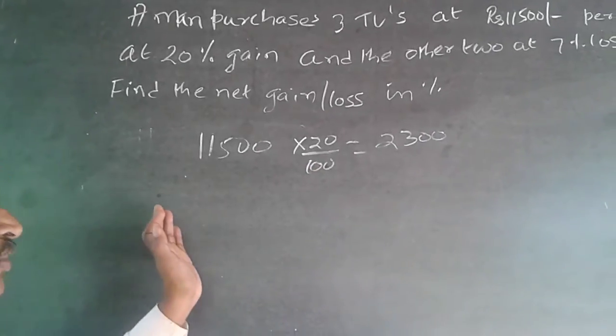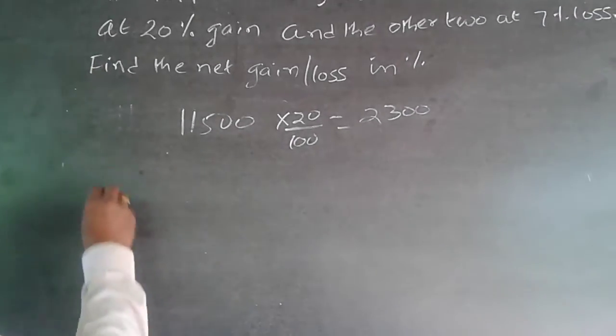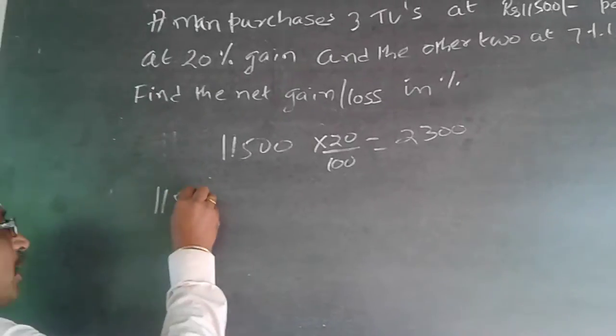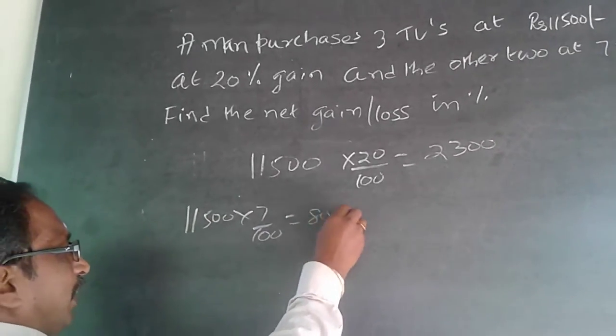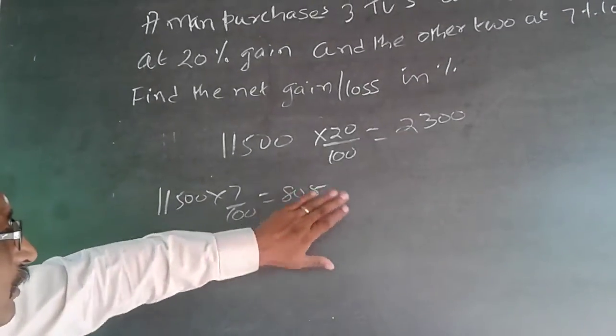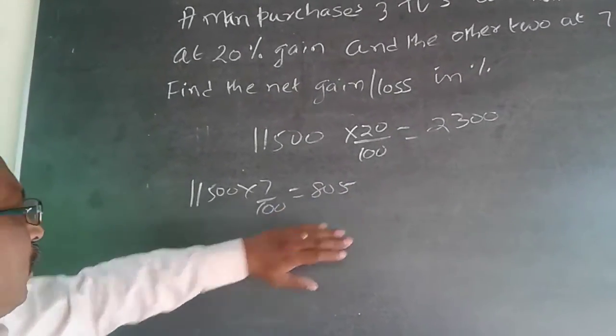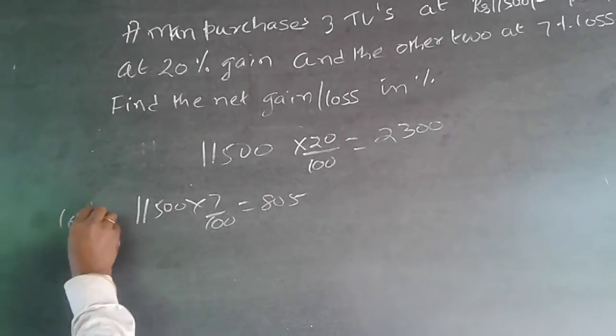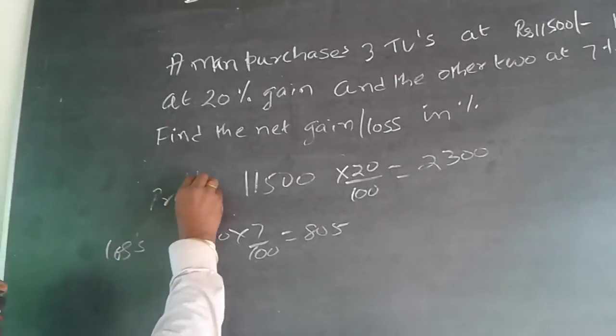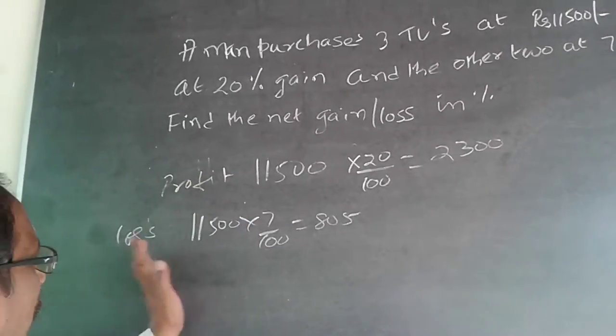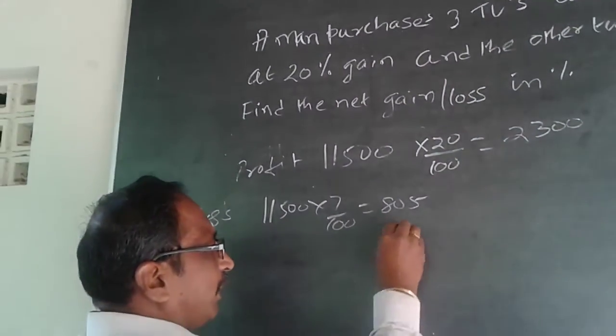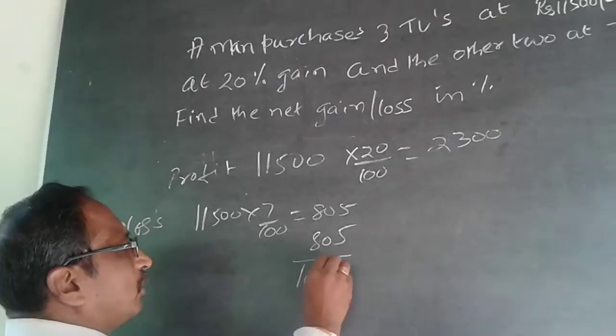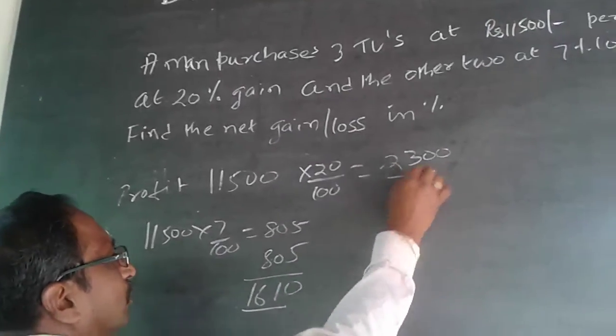On the other two TVs is going to make a loss of 7%. So, it will be 11,500 into 7 by 100 will be equal to 805. On another TV, because this is one, second TV is making a loss of 805. This is loss and this is profit. And on another TV is going to make a loss of another 7%. So, it will be one more 805. The total loss value is 1,610. Profit value is 2,300.